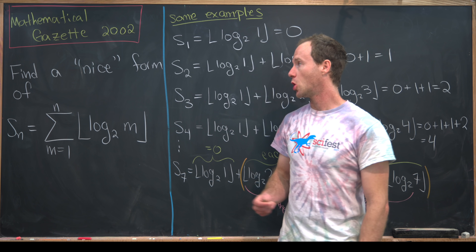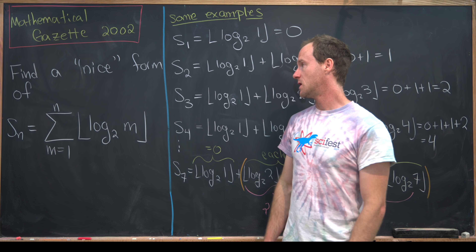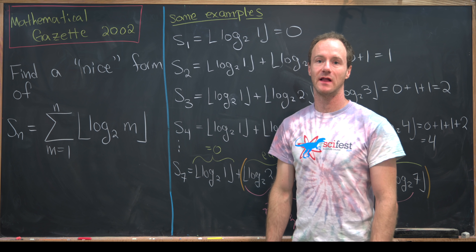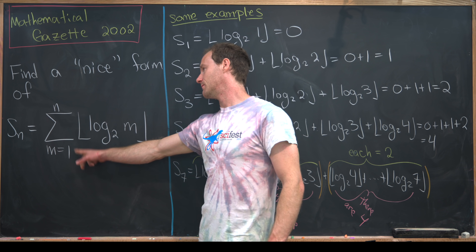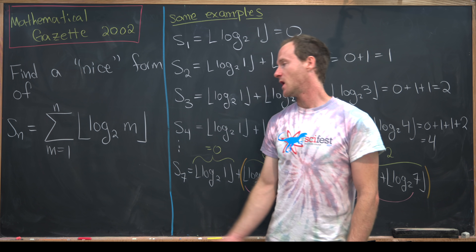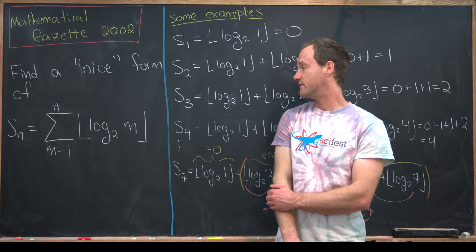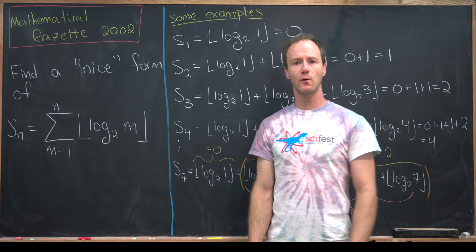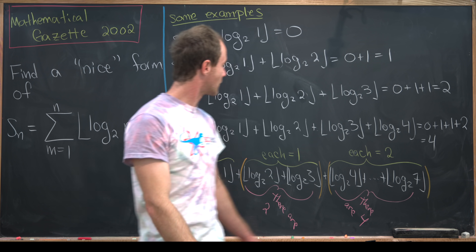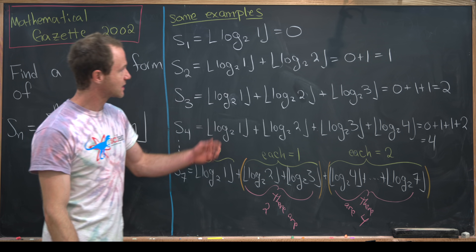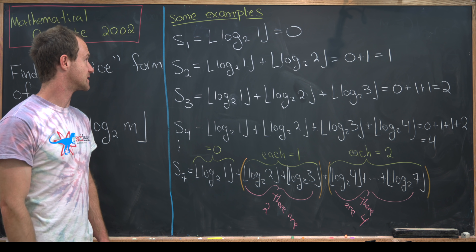Our goal is to find a nice form of the sum, which I'll call S_n. It's the sum as m goes from 1 to n of the floor of log base 2 of m. Before we look at a construction of this nice form, let's look at a couple of examples to see if we can get an idea of what's going on.